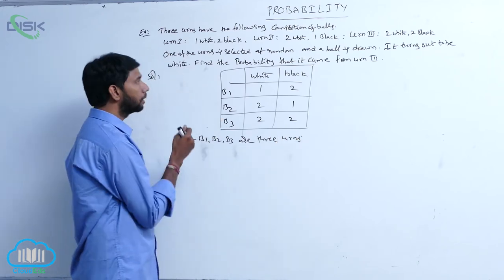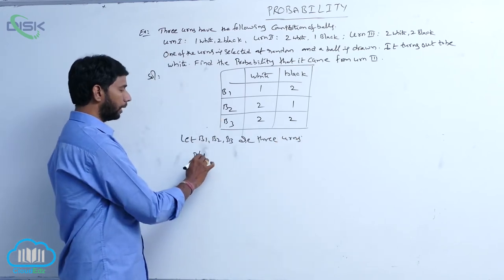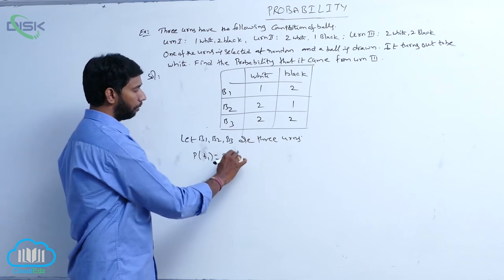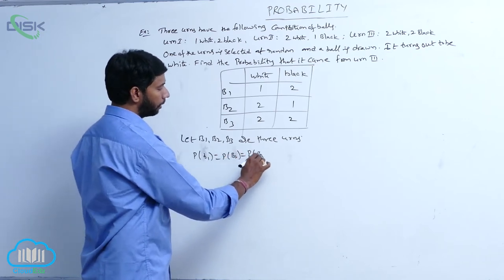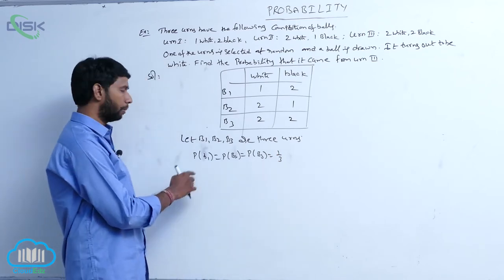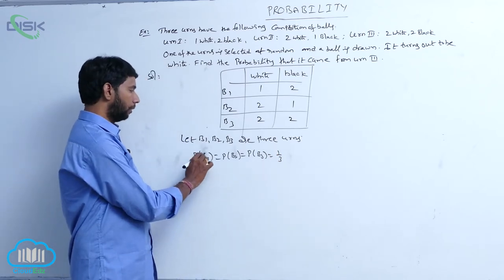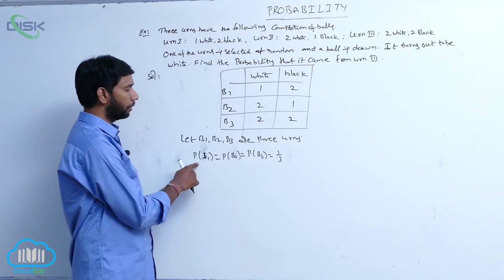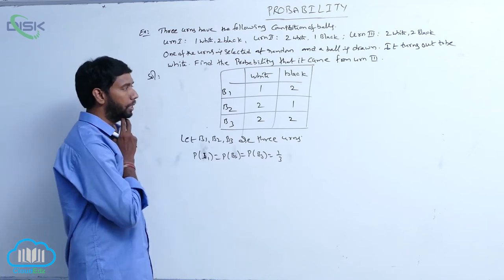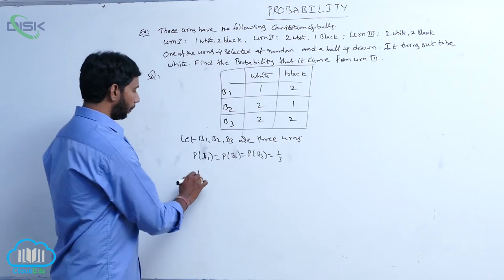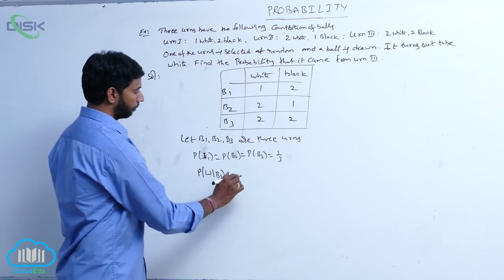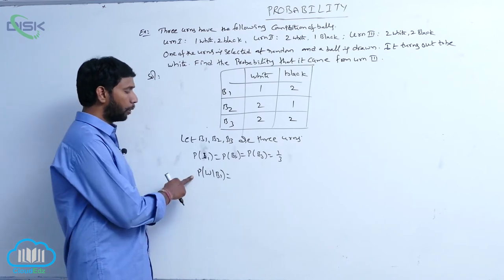Since the three bags are equally likely, the probability for the first bag P(B1) is equal to P(B2) is equal to P(B3) is equal to 1/3. And the probability of drawing a white ball from the first bag is 1 by 3.